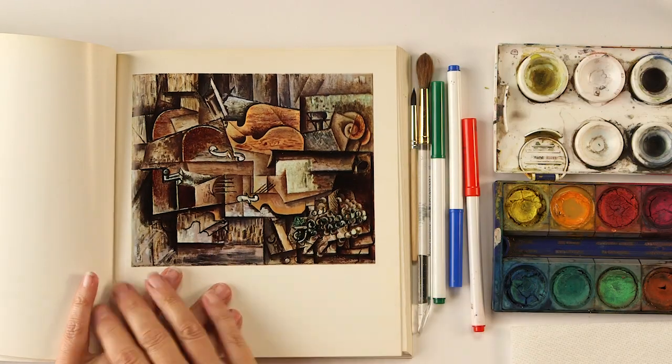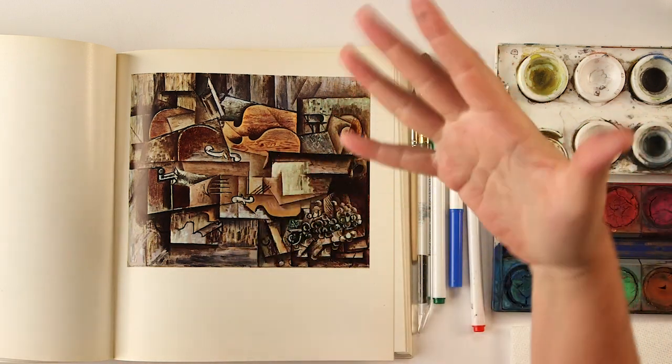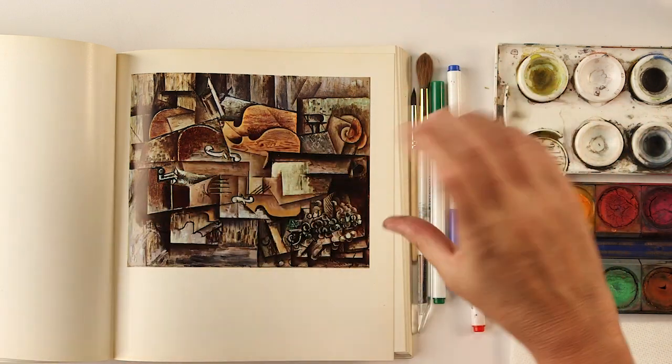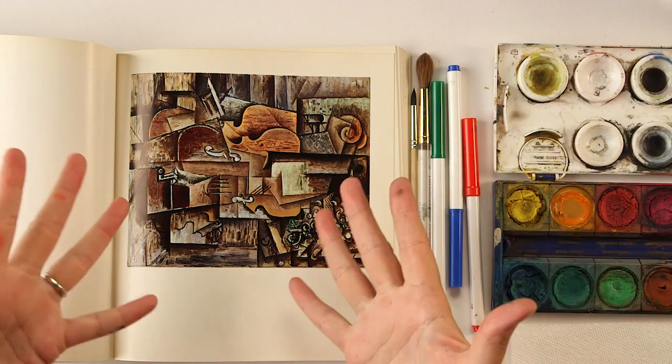What it is, is they don't paint the thing as it looks in real life, but they paint it as if it's coming from several directions in one picture. For example, this is a violin and Picasso painted part of it from the front and part of it from the side. The idea is that you get the idea of a violin rather than a violin.